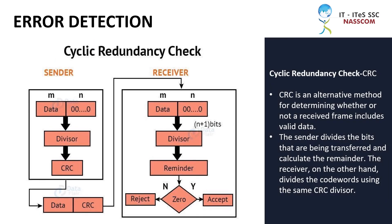Cyclic Redundancy Check (CRC) is an alternative method for determining whether or not a received frame includes valid data. The sender divides the bits being transferred and calculates the remainder. The receiver, on the other hand, divides the codewords using the same CRC divisor.